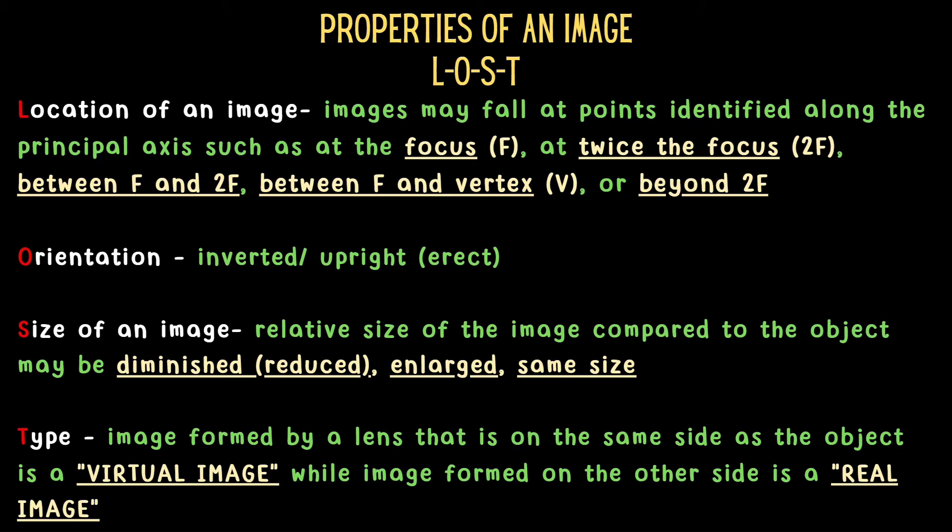T is the type of image. It can be virtual image, wherein the image formed by a lens is on the same side as the object. Or real image, wherein the image formed is on the other side of the lens. Remember that it's easy to know if the image is real or virtual. When we say real image, the image is always inverted, and virtual is always upright.